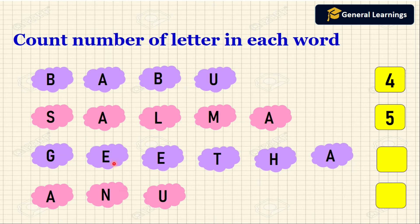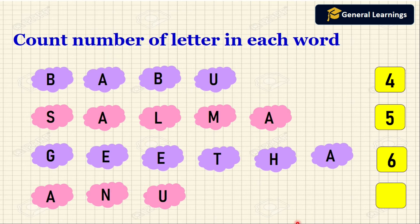G, E, E, T, H, A. So how many letters are present in this word? 1, 2, 3, 4, 5, 6. So totally 6 letters are present in this word.